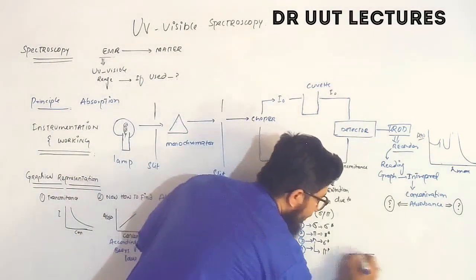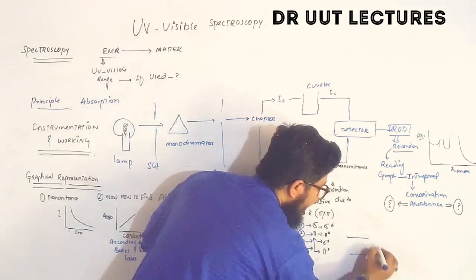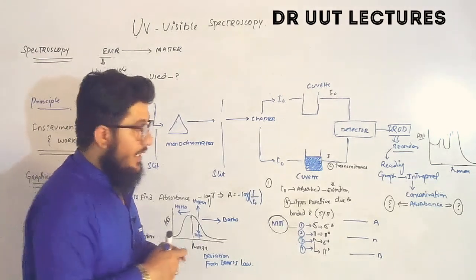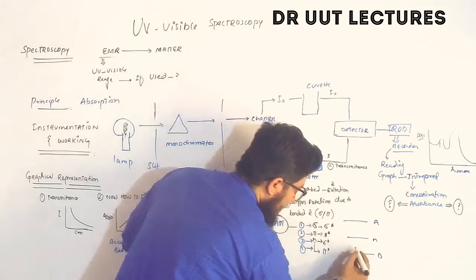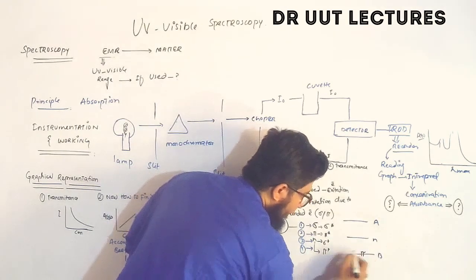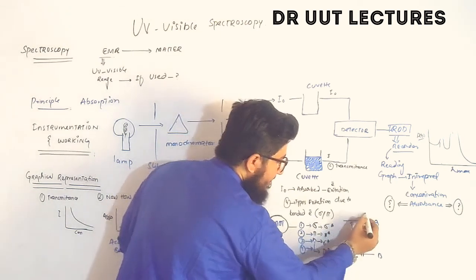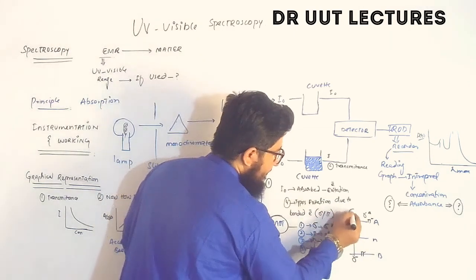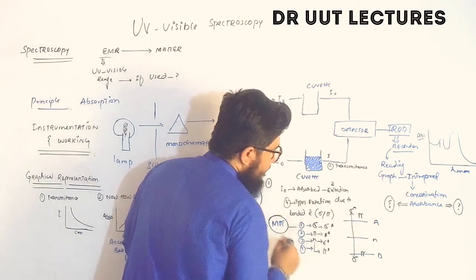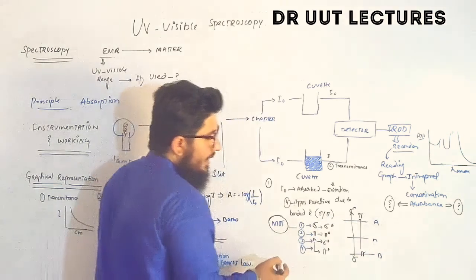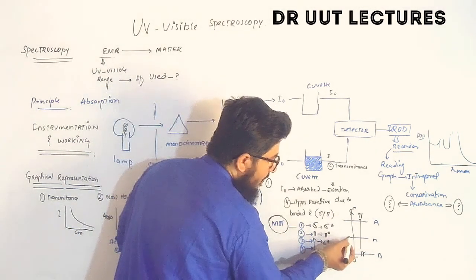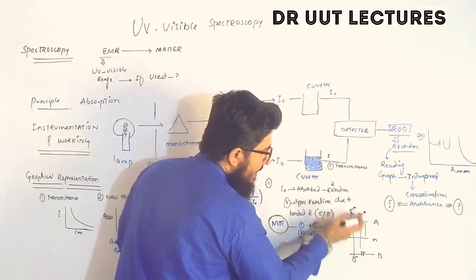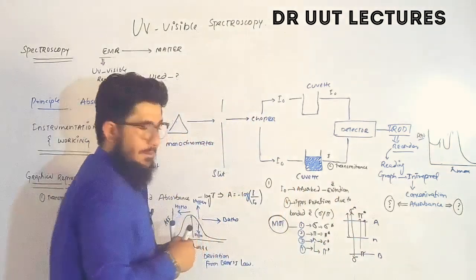According to molecular orbital theory, we have two bond types and three regions: bonding molecular orbital, non-bonding (n), and anti-bonding molecular orbital. In the bonding region we have sigma bonds and pi bonds. The first transition is sigma to sigma star, the second is pi to pi star, the third is n to sigma star, and the fourth is n to pi star.